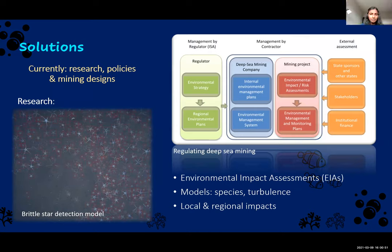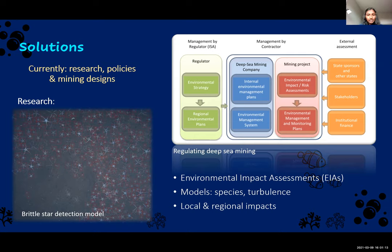Because commercial mining hasn't really begun yet, a lot of the work now is on research, developing regulations, and designing technology. There is a lot of uncertainty about deep sea mining, so research on species and sediment plumes is required, which can be done through monitoring devices or models such as the brittle star detection model shown here. Environmental impact assessments also determine risks and impacts prior to project approval, and they must consider impacts not just to one mine site but to the entire region. The figure on the right discusses approaches to regulate deep sea mining, including EIAs and monitoring, as well as policies and regulations.